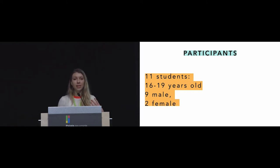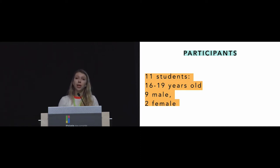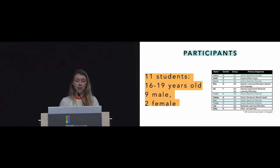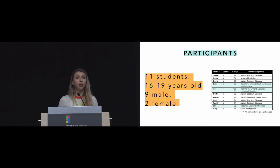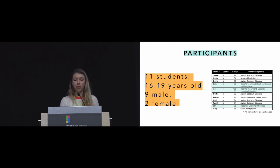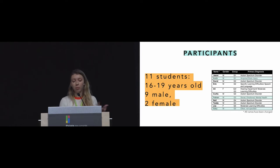Here we studied the cubes in a secondary school classroom with special education needs students in England, taking over their weekly elective computing session for six weeks. There were 11 students aged 16 to 19, nine male and two female. Five were on the autism spectrum, three had primary diagnoses including learning difficulties — two with general moderate learning difficulties and one with specific speech and language difficulties — and three had other primary diagnoses including acquired brain injury, social emotional and mental health difficulties, and one had no specific primary diagnosis.